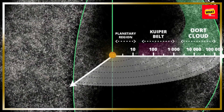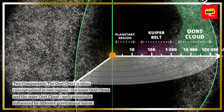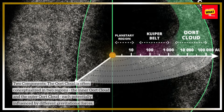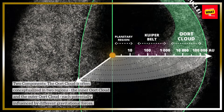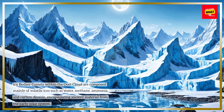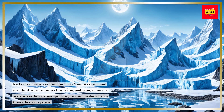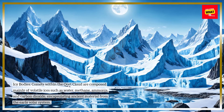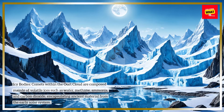Structure and Composition. Two Components: The Oort Cloud is often conceptualized in two regions — the inner Oort Cloud and the outer Oort Cloud — each potentially influenced by different gravitational forces. Icy Bodies: Comets within the Oort Cloud are composed mainly of volatile ices such as water, methane, ammonia, and carbon dioxide, encapsulating ancient material from the early solar system.